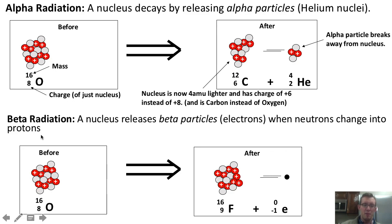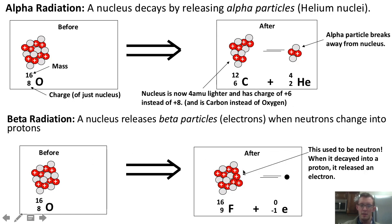The next type of radiation is beta radiation, which occurs when a neutron inside of a nucleus changes into a proton and releases an electron, or a beta particle, in the process. We can see that here — we have the same oxygen nucleus, but in this case one of its neutrons, this neutron right here, changed into a proton, and in the process of that change, an electron got released.